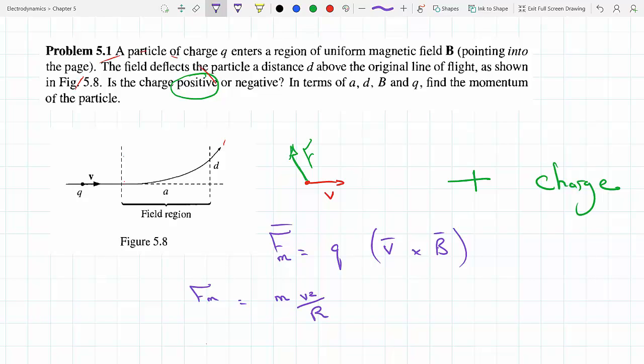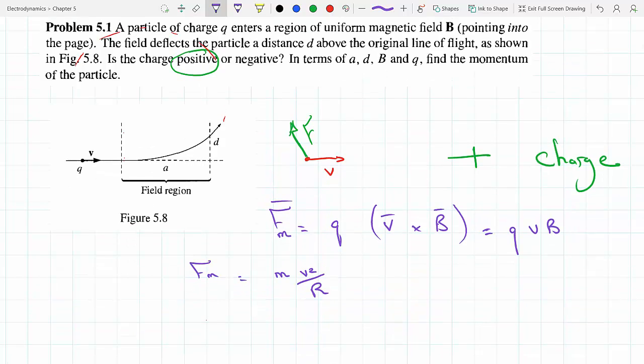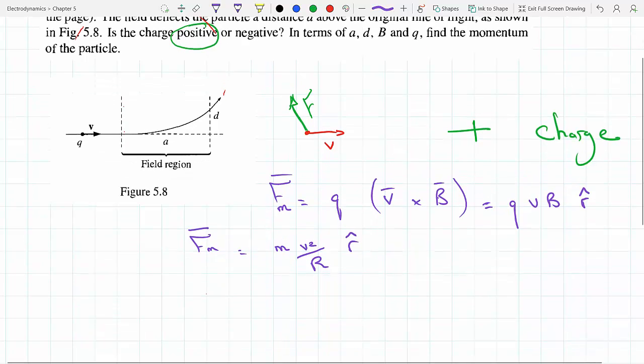Now we know that v and B are perpendicular, so this cross product will just turn out to be qvB sin(90°), which is one. And this is pointing in the r direction, toward the center, because this is a circular force. The magnetic force would have to be in the same direction as r hat.